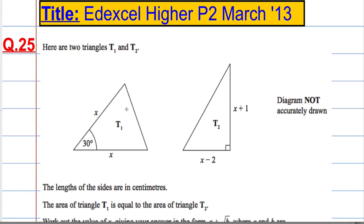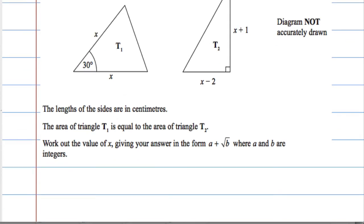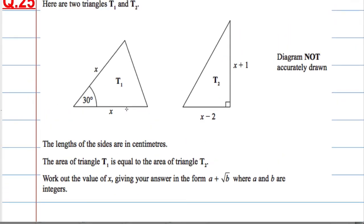Question 25. We've got two triangles, T1 and T2. The lengths of the sides are in centimeters and the area of T1 equals the area of T2. Work out the value of x, giving your answer in the form a plus root b, where a and b are integers.